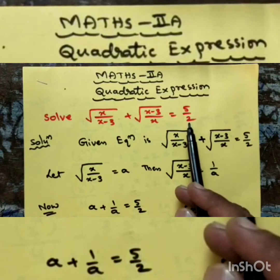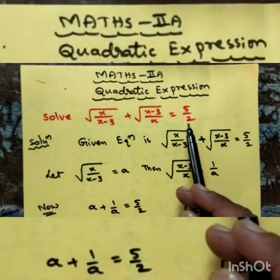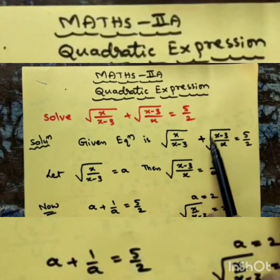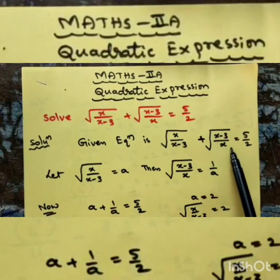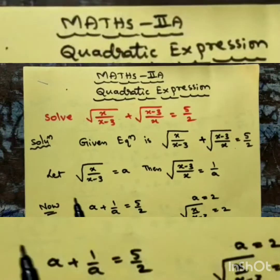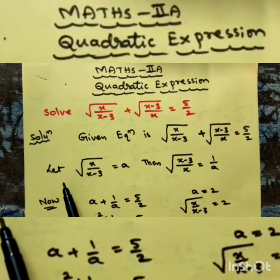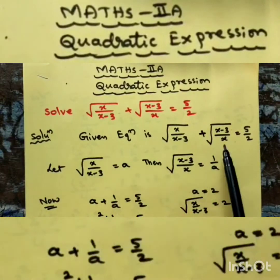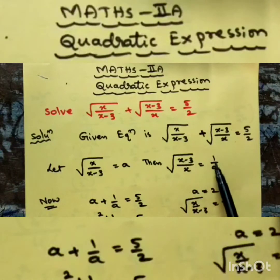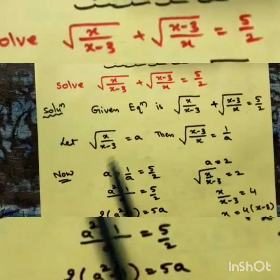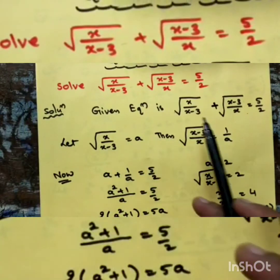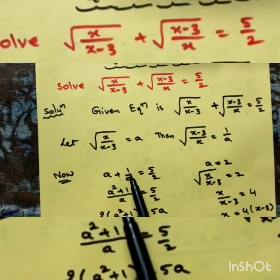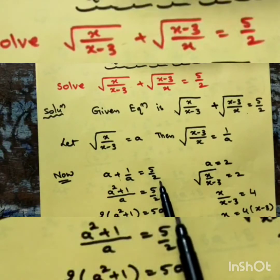Solve means finding the value of x. The given equation is √(x/(x-3)) + √((x-3)/x) = 5/2. Let the first term be a; then the second term is the reciprocal, 1/a. Substituting these values into the equation gives a + 1/a = 5/2.